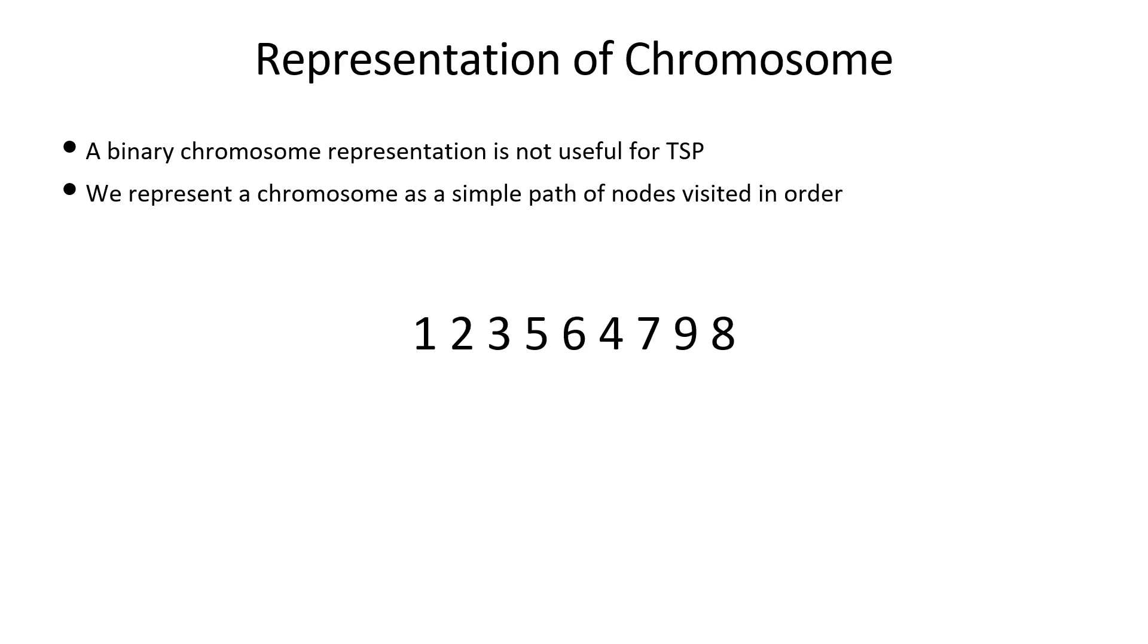The binary chromosome representation we have seen in class is not useful for TSP. All vertices appear exactly once in the path, so while crossover it is hard to maintain this constraint.